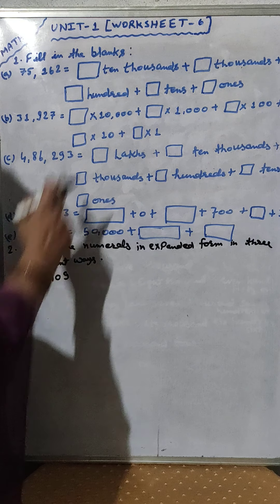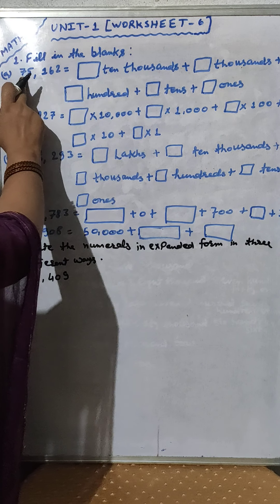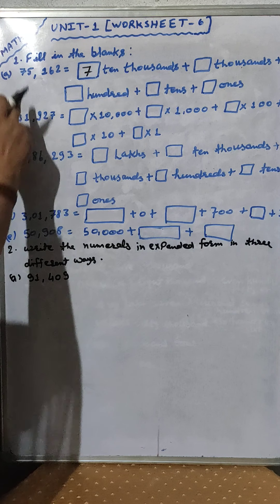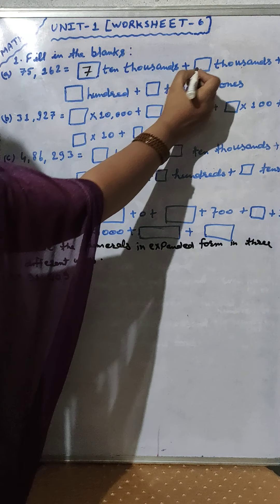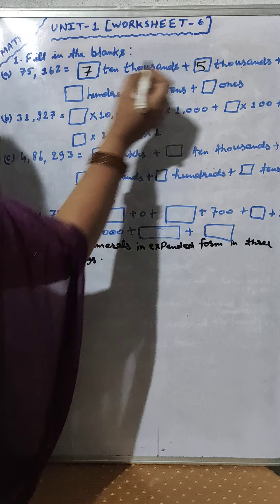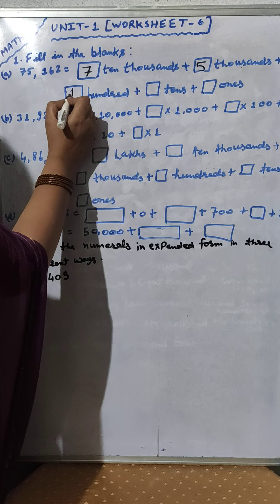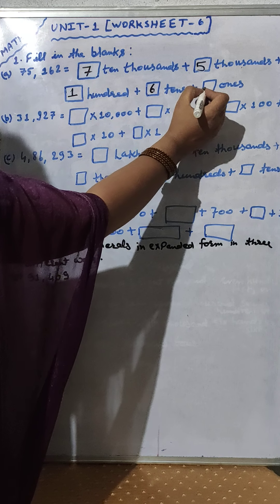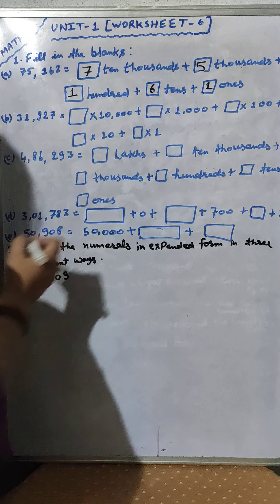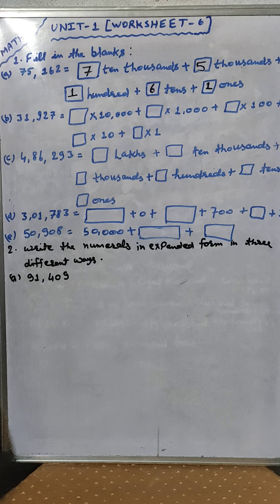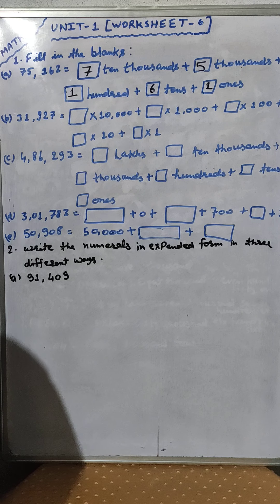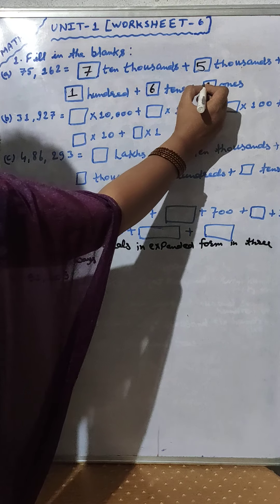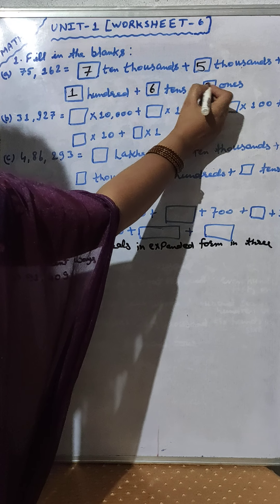Now look here carefully. This will be dash 10,000. Means 7 is in the place of 10,000, so we will write here 7. Then after 1000, 5 is in the place of 1000, we will write here 5. Then after 100, 1 is in the place of 100. Then after 6 is in the place of 10s, and 2 is in the place of 1s. So we will write here 7 ten thousands plus 5 thousands plus 100 plus 6 tens plus 2 ones.